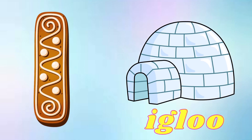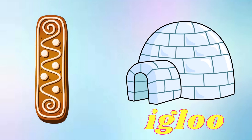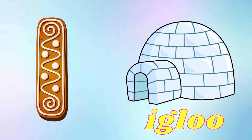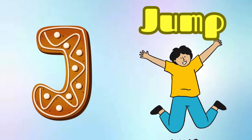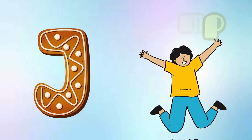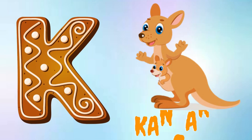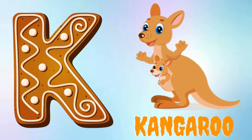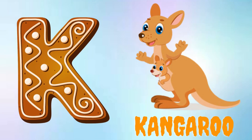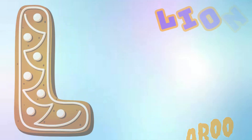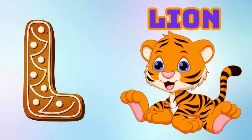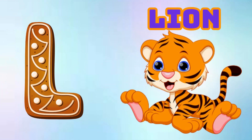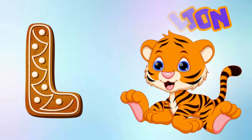I is for Igloo, I-I-Igloo. J is for Jump, J-J-Jump. K is for Kangaroo, K-K-Kangaroo. L is for Lion, L-L-Lion.